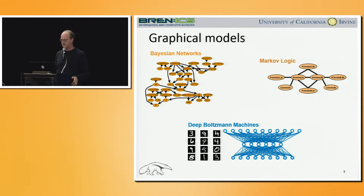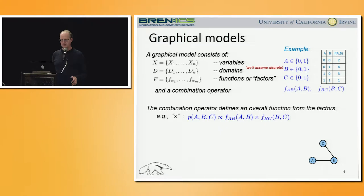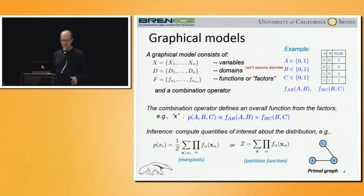Graphical models are a formal framework widely applicable to a wide variety of applications and problem types — spatial networks, macro networks, and so on. Formally, a graphical model consists of a set of variables, set of domains — we assume domains are finite and discrete — and then a set of functions or factors. There is a combination operator that defines an overall function from the factors, such as a joint prior distribution as a product of individual factors. Then we have some inference task to compute some quantity of interest from the distribution, such as marginal distribution on a variable, where the constant Z is a normalizing constant known as the partition function.